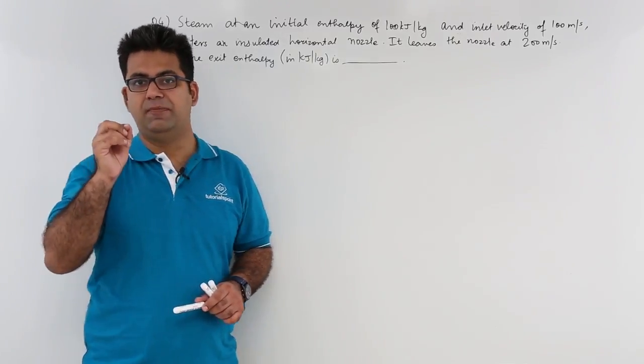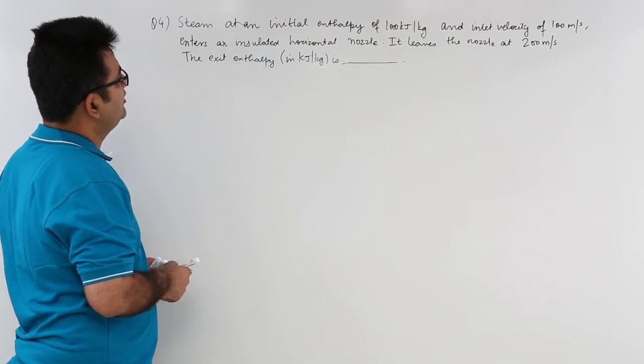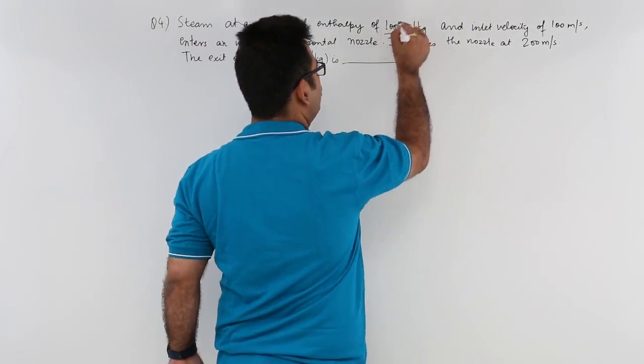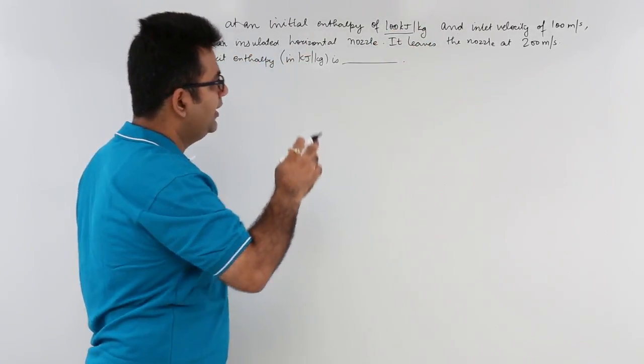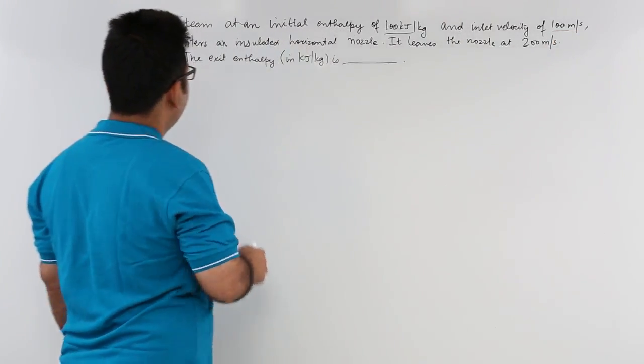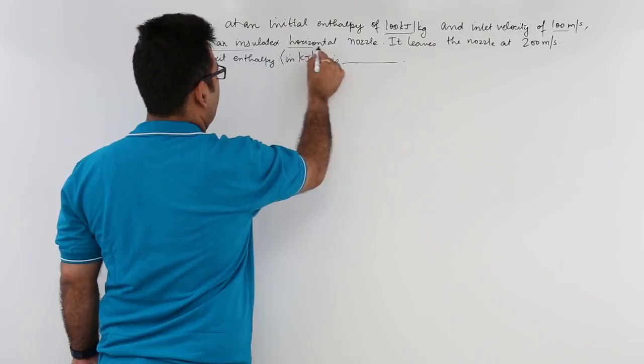Now let's look at question number 4. The question says steam at an initial enthalpy of 100 kilojoules per kg and inlet velocity of 100 meter per second enters an insulated horizontal nozzle.